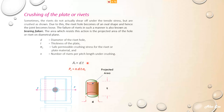If you have double riveted or triple riveted, you multiply by two or three — depending on how many columns of rivets you have. So the crushing strength is σ_c × D × t × N, where N is the number of rivet columns. This gives you the crushing strength.